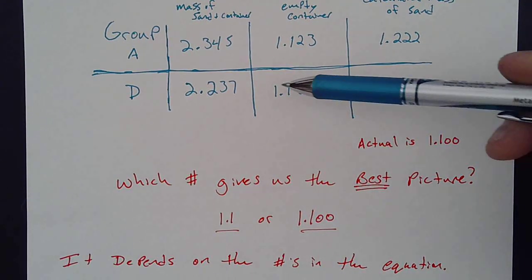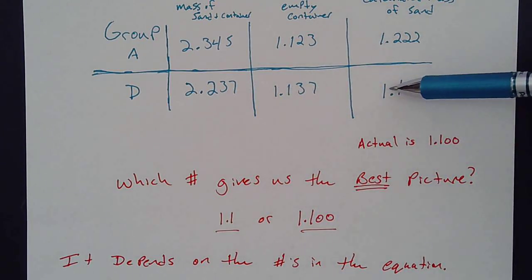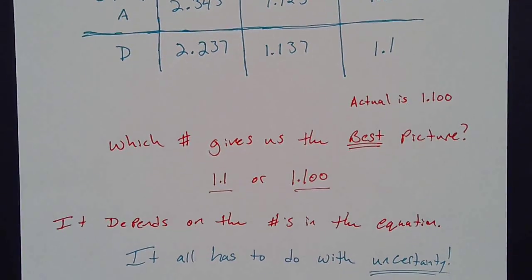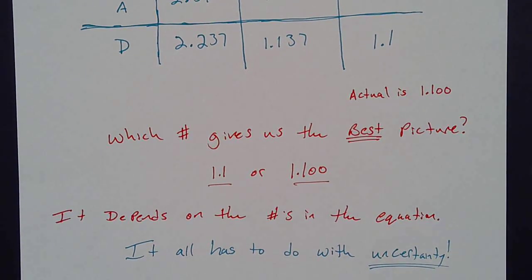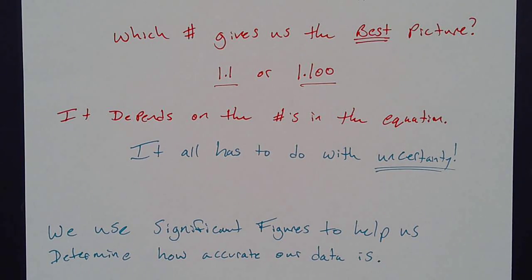So in our case, we have, look at all these digits. We have 4 here, we have 4 here, and I'm only getting 2 on this side. So if we're really talking about all these things called uncertainty, which we talked about in class, we have to really pay attention to what the numbers are actually telling us. So we have to consider something that a lot of scientists call significant figures. And significant figures are used to determine how accurate our data is.